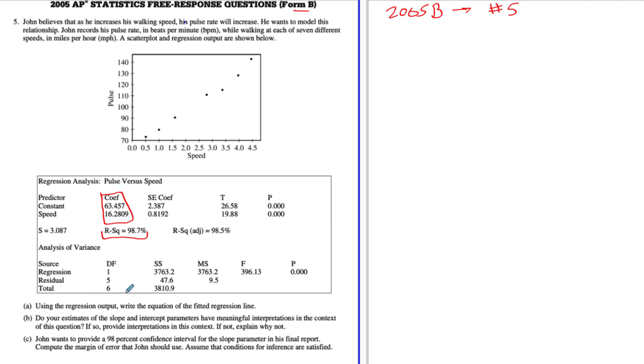Part A, using the regression output, write the equation of the fitted regression line. So that's pretty easy to do. Looking at the two coefficients they give us, we have one for constant and one for speed.